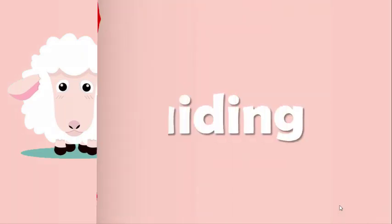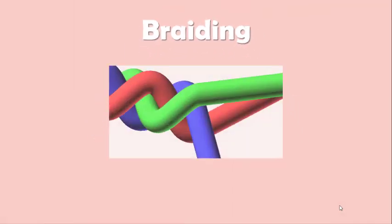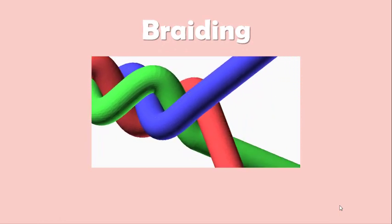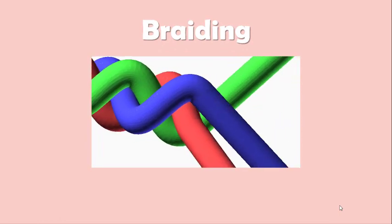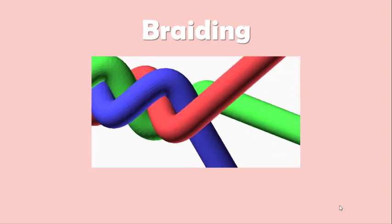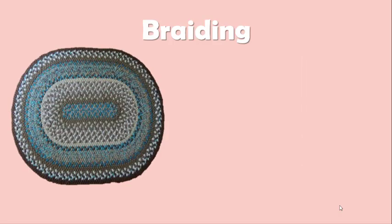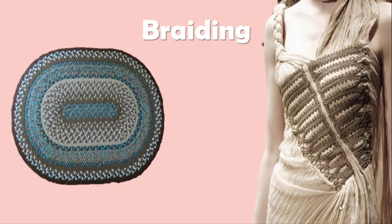Second method is braiding. Three or more yarns are doubled back and interwoven, one yarn over another to form a fabric. An early example of braiding is the handmade braided rug. Today, complex braids are made and used as trim or fashioned into unusual garments.